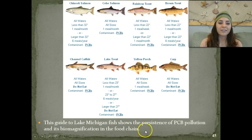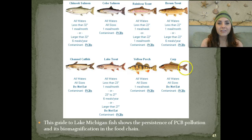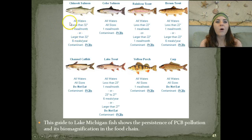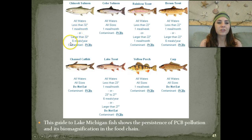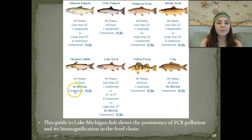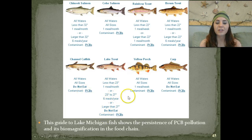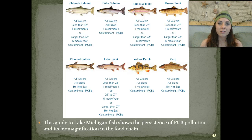This chart is a guide to Lake Michigan fish that shows the persistence of PCB pollution and its biomagnification in the food chain. Basically, it tells you what you can and cannot eat because of the level of PCBs in those different types of fish. For example, in all waters, if the fish is less than 32 inches, you can eat it once a month safely; if it's larger than 32 inches, once every other month safely. The channel catfish says absolutely do not eat because it's so contaminated with PCBs. Same for larger lake trout—you can't eat it because it's contaminated with PCBs due to biomagnification. Typically, the larger the fish, the more toxins it will contain if it's in an area exposed to some type of toxin.